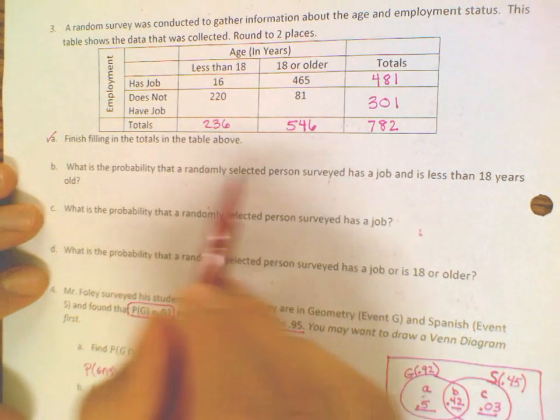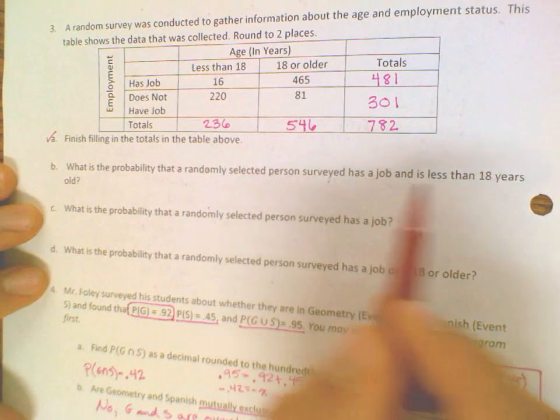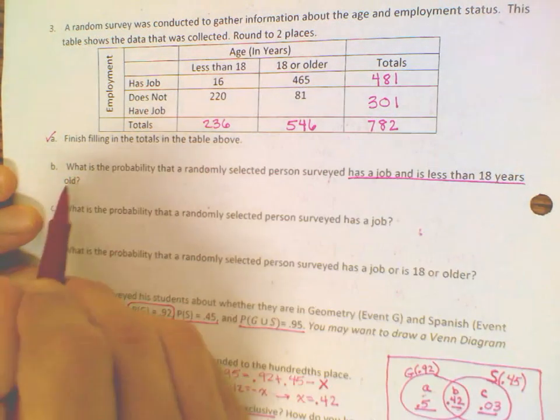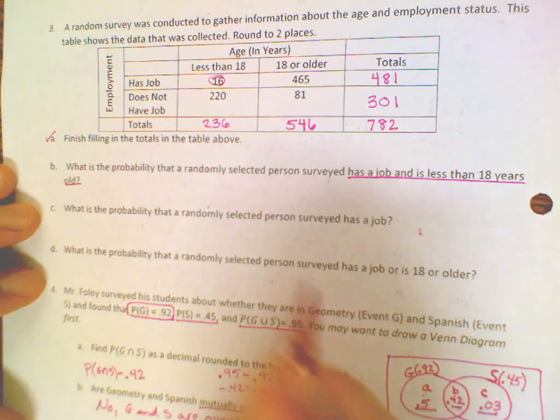What is the probability that a randomly selected person surveyed has a job and is less than 18 years old? If they have a job and is less than 18, well, the only section there would be 16 people.